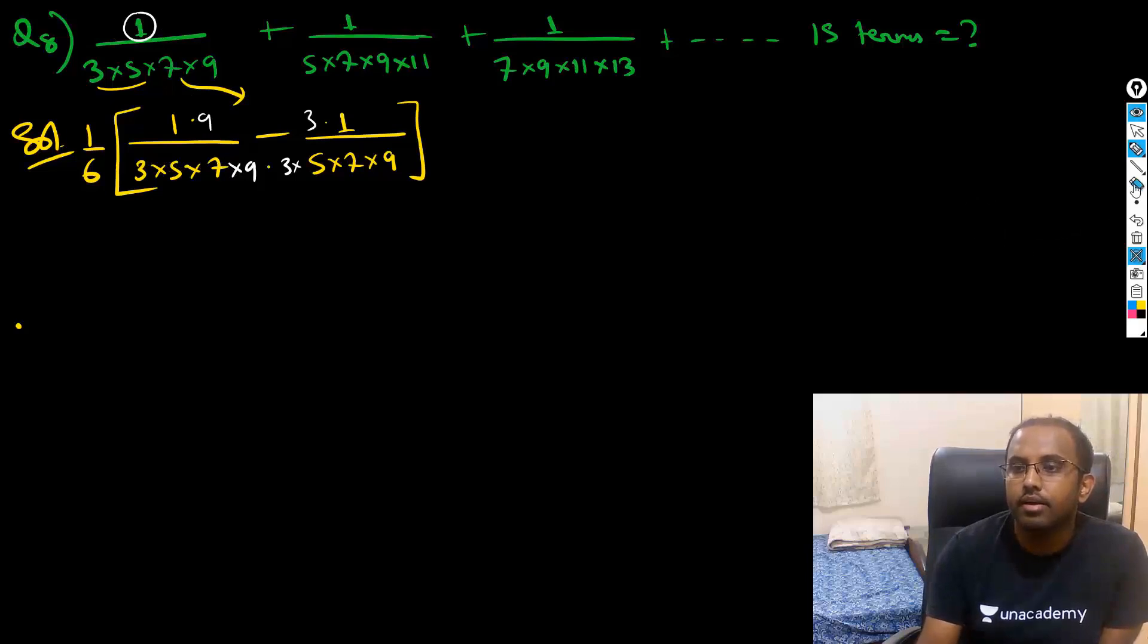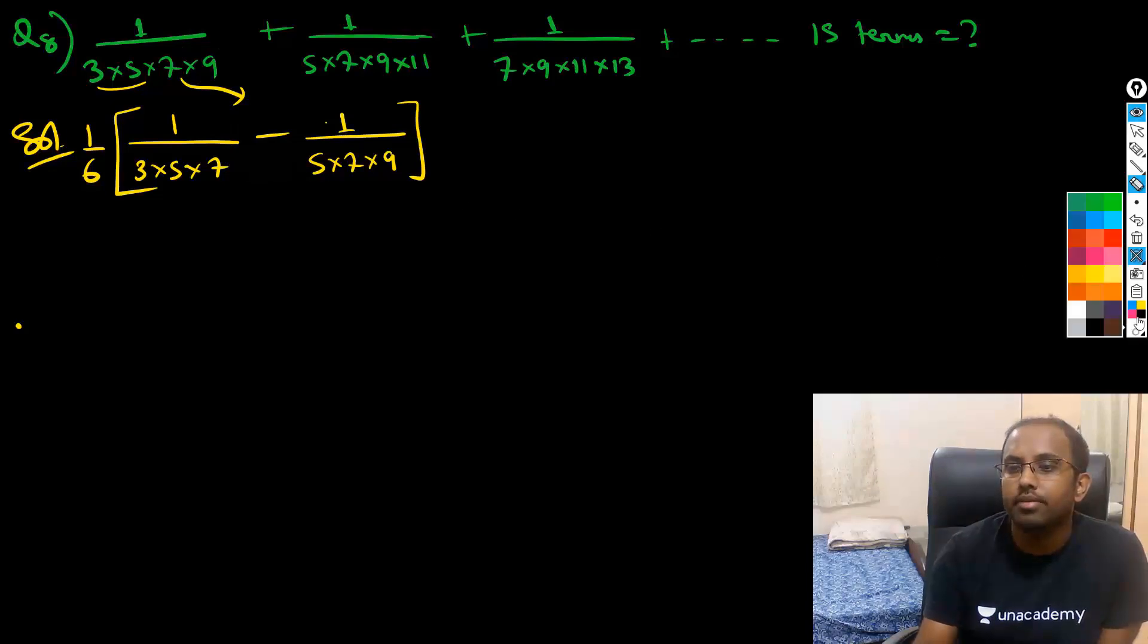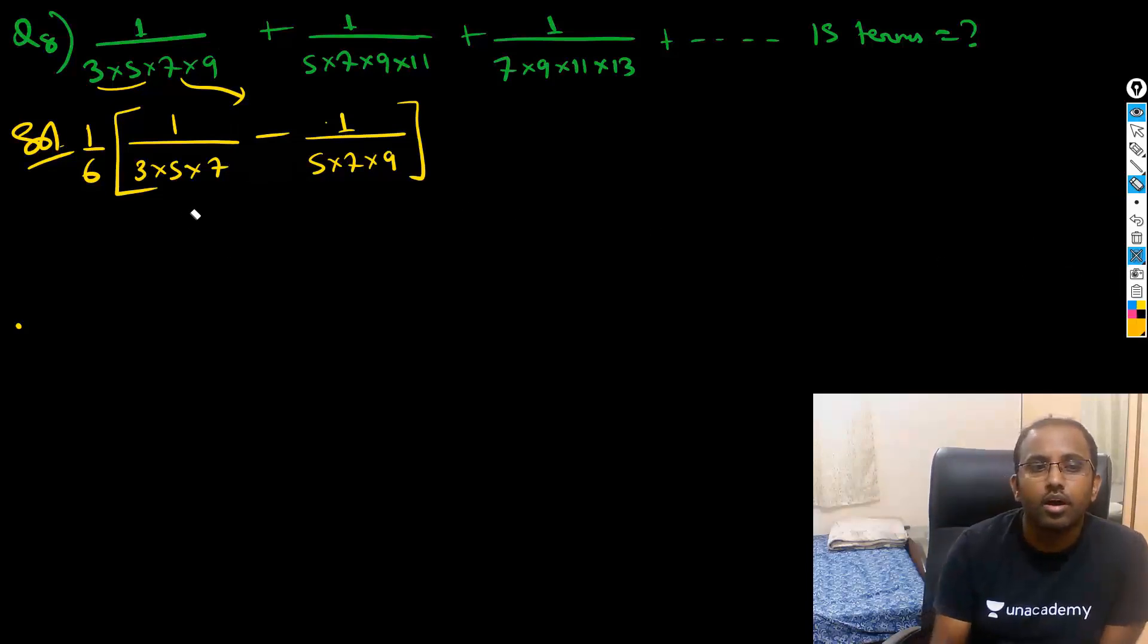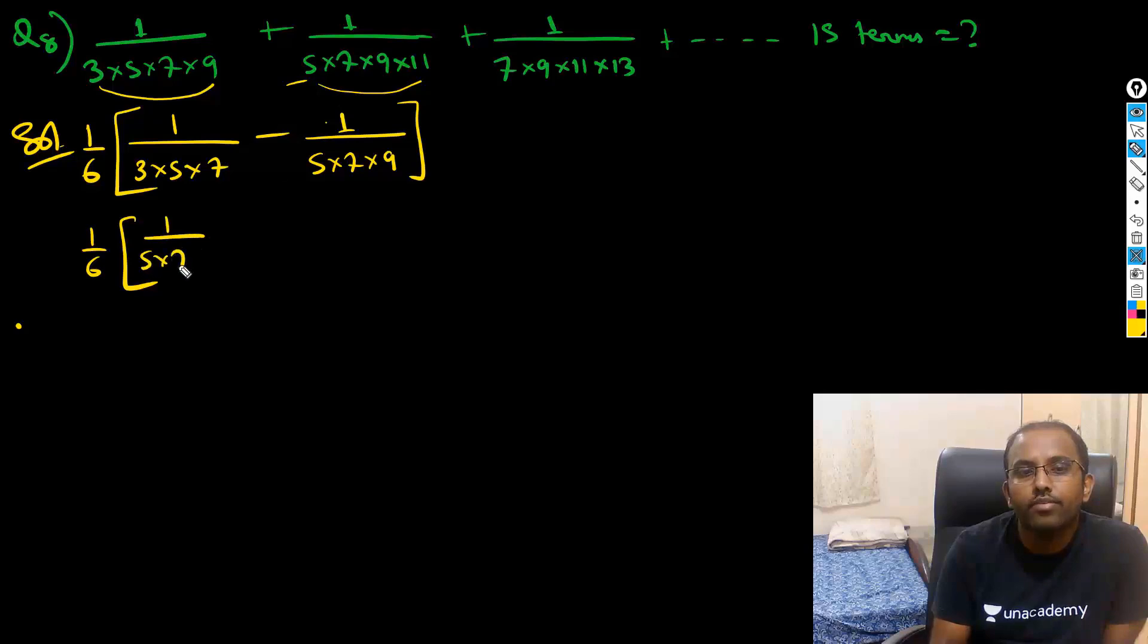That basically means that 1/6 here - 1/6 is the gap between the first and last term. 3 and 9, that gap is 6. So now again I can write 1/6 taken outside, that is 5 to 11 gap is 6: 1/(5×7×9) minus 1/(7×9×11).